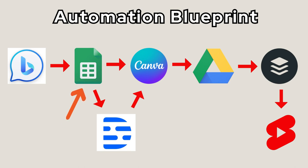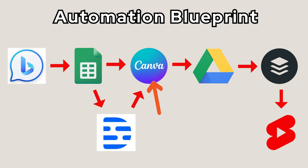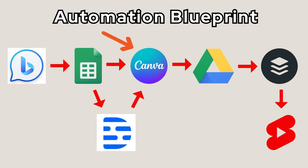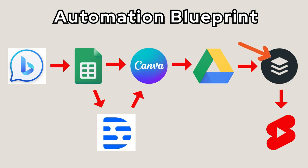Next, the text from Google Sheets will be converted to voiceover using Descript — an AI text-to-speech converter. After that, the voiceover will go to Canva. All the text from Google Sheets will go directly to Canva, where we will create multiple videos in bulk, which will then be uploaded to Google Drive.